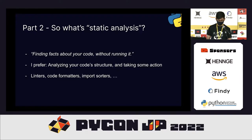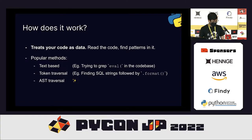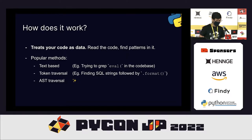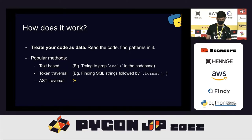Static analysis basically means finding facts about your code without actually having to run it. That's the book definition. I prefer to call it: analyzing the structure of your code and taking some action based on that. Common software like linters — pylint, flake8 — code formatters like black, and import sorters all do static analysis in the background to do what they do. The basic idea is that they treat your code as data: they read the code, find patterns in it, and then take some action.